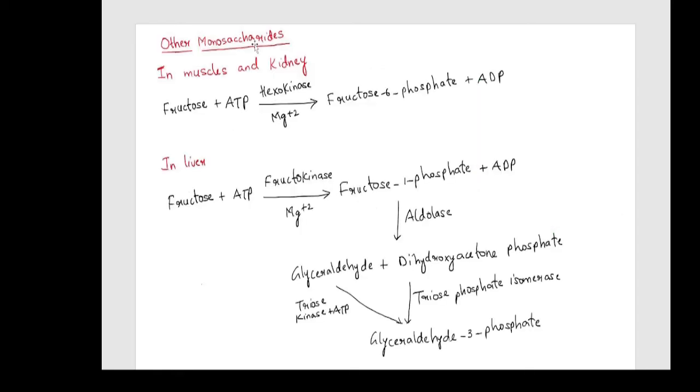Now let's see how monosaccharides other than glucose enter glycolysis. In muscles and kidney, hexokinase acts on fructose to produce fructose-6-phosphate which is a glycolytic intermediate and can enter into glycolysis.